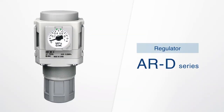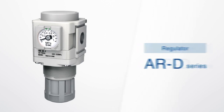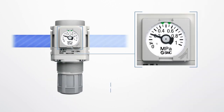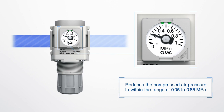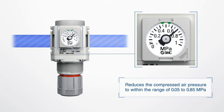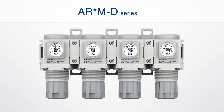The ARD series regulator reduces compressed air pressure down to between 0.05 and 0.85 MPa. Multiple regulator units can be connected together.